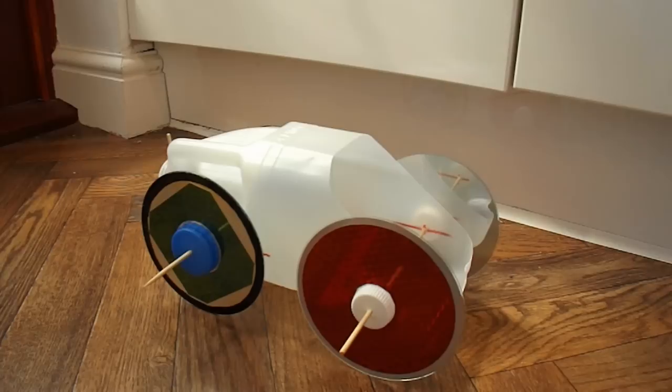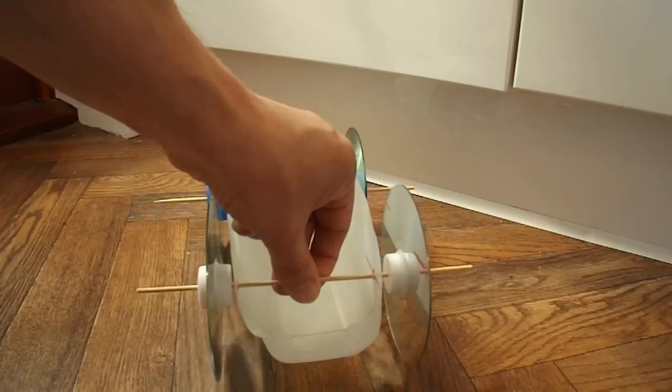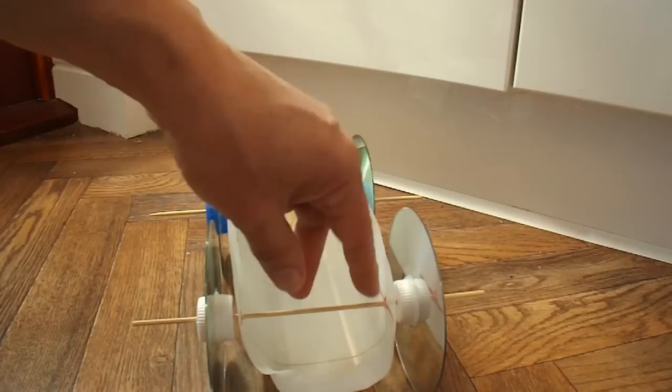The important thing to remember when you poke the holes through for the axles to go through, make sure that they're nice loose fit. Make them bigger than the axle. If they're tight, the car won't work. They've got to be nice and loose. But there we go. Rubber band powered plastic milk bottle car.